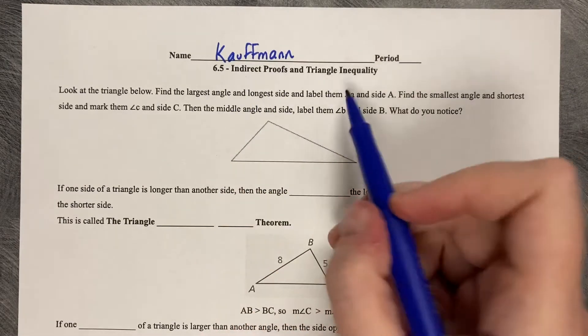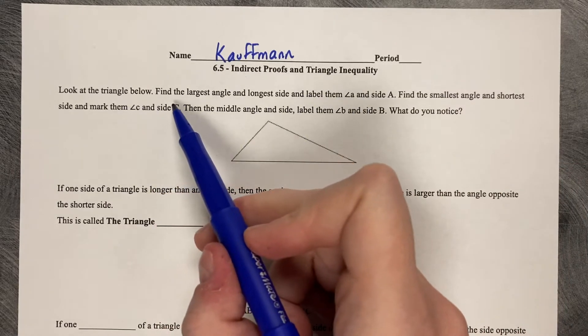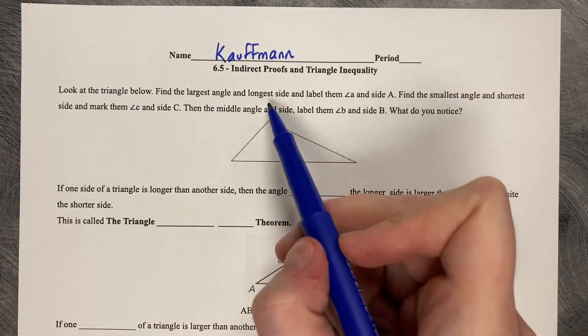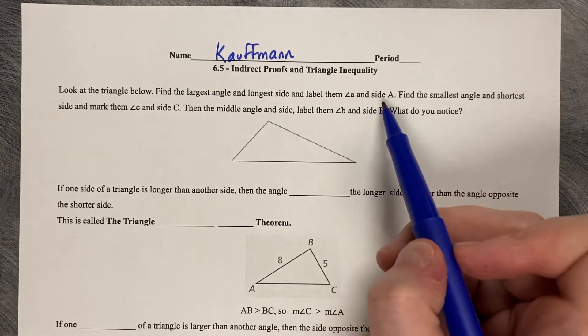6.5 indirect proofs and triangle inequality. Look at the triangle below. Find the largest angle and the longest side and label them angle A and side A.